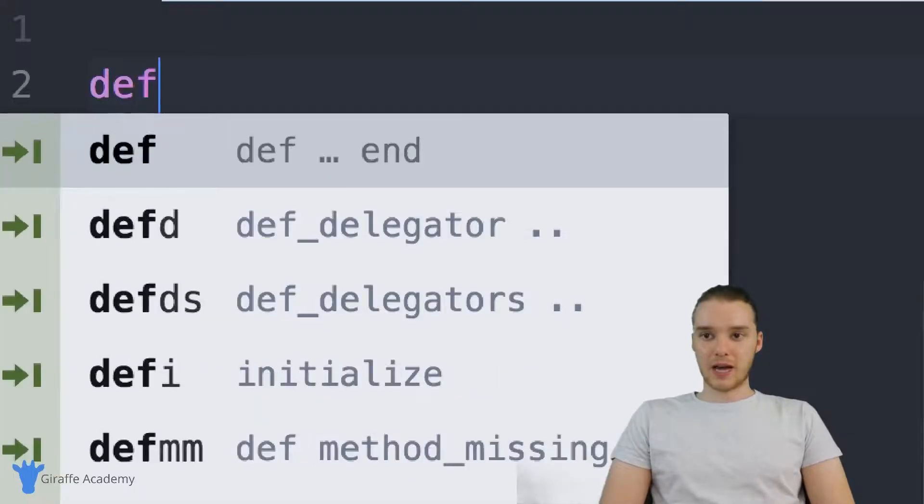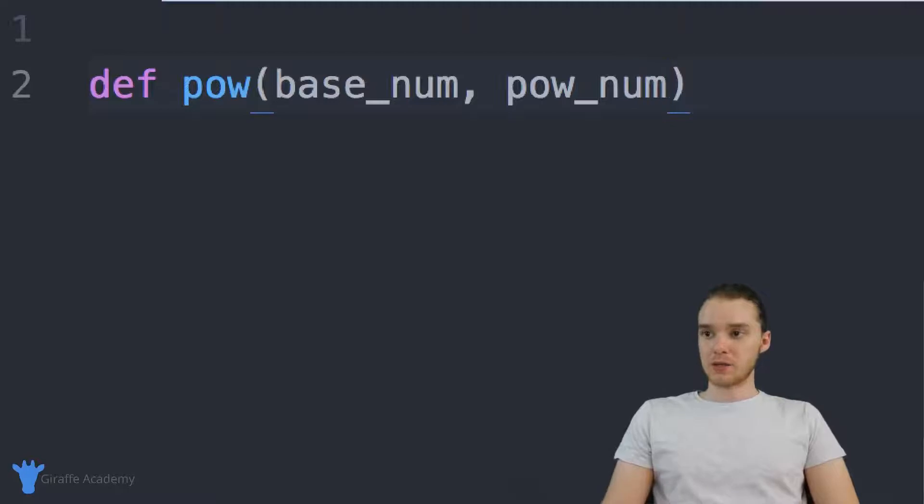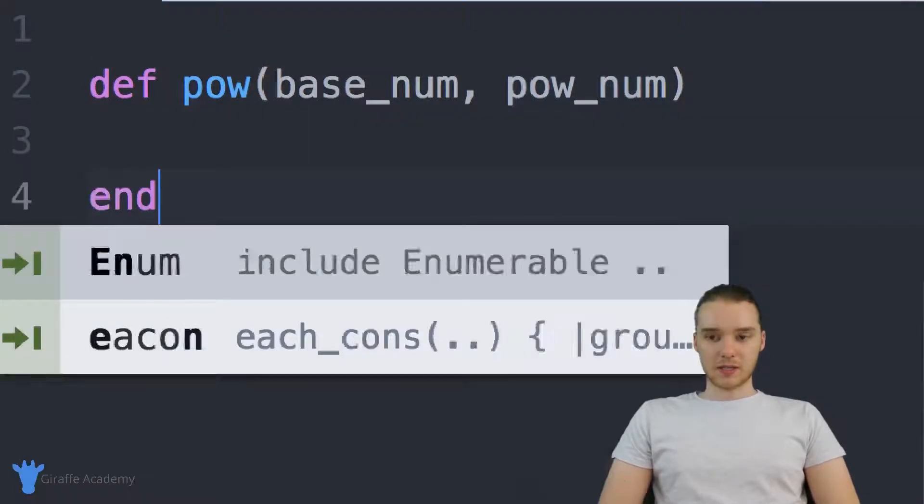So I'm just going to say def. And why don't we just call this pow for like power. So it'll take a number to a specific power. And then inside of these parentheses, we actually want to have this method accept two parameters as input. So we want the base_num, and we also want the pow_num. So the base number and that's going to be taken to the power number. Alright, let's end off this method.